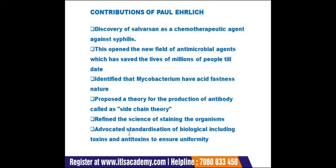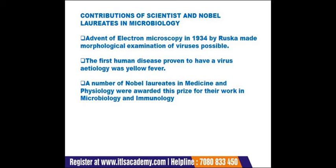Paul Ehrlich discovered Salvarsan as a chemotherapeutic agent against syphilis and opened a new field of antimicrobial agents that saved millions of lives. He identified that Mycobacterium tuberculosis gives an acid-fast nature to bacteria, proposed the side-chain theory for antibody production, refined the science of staining microorganisms to better visualize structure, shape, and type, and advocated the standardization of biologicals including toxins and antitoxins. The advent of electron microscopy in 1934 by Ruska allowed morphological examination of viruses, and many Nobel laureates in microbiology and immunology followed.